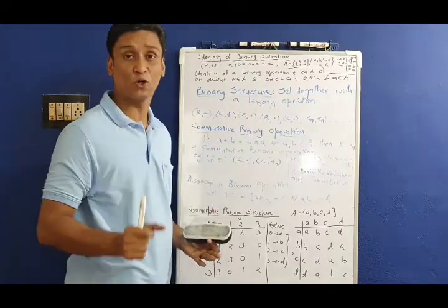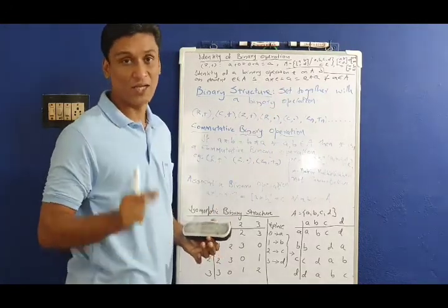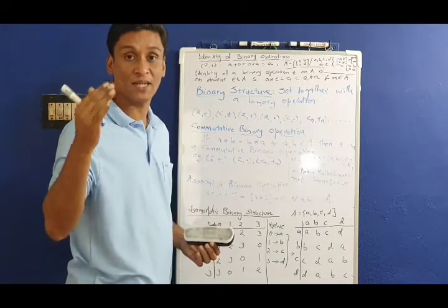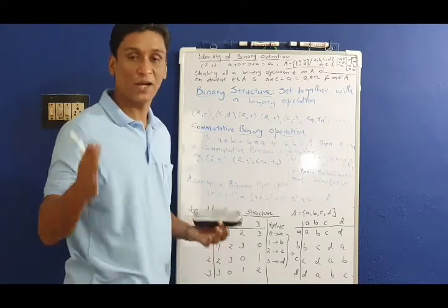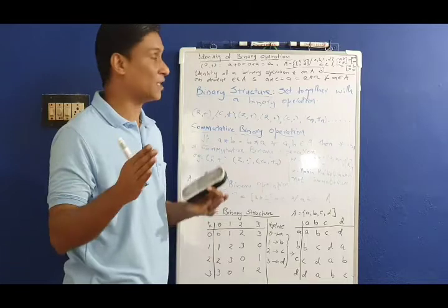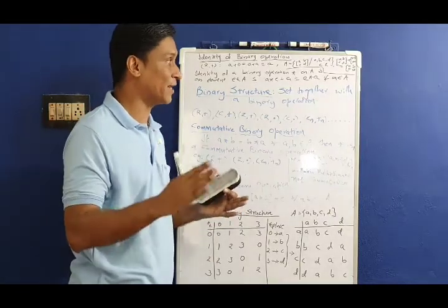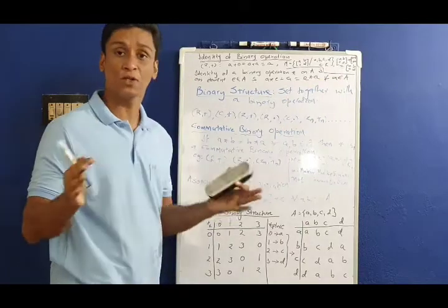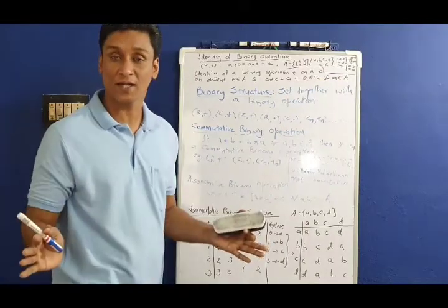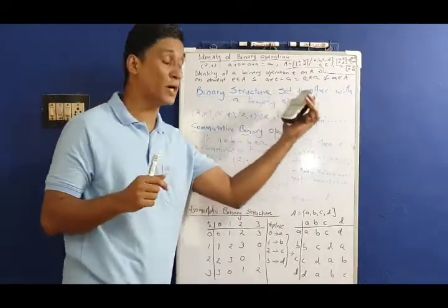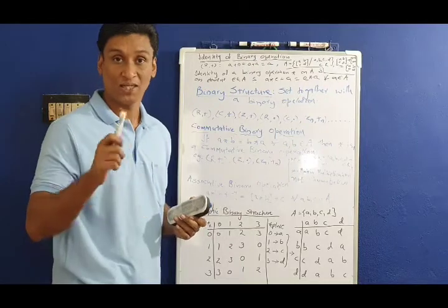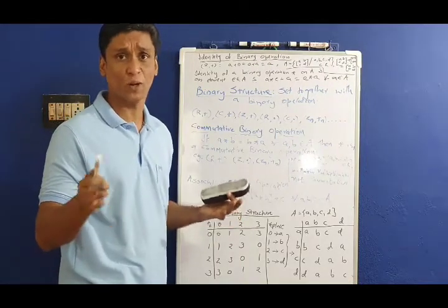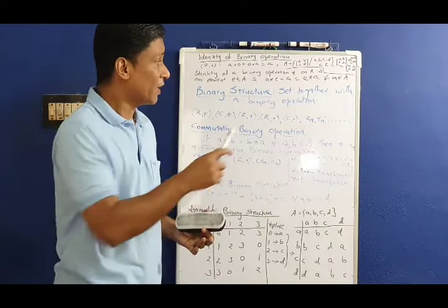Now consider M, the set of all 2 by 2 matrices. Instead of 2 by 2 matrices with real number addition, we use matrix addition. Matrix addition is a binary operation on the set of 2 by 2 matrices.